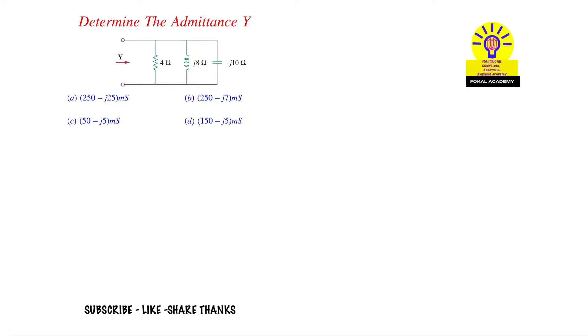Hi everyone. In this problem, we need to find the overall admittance for the given RLC circuit. R is given as 4 ohms, inductance as J8 ohms, and capacitance as minus J10 ohms. These are impedances.